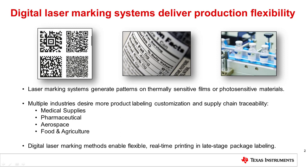Some examples where laser marking is used include printed circuit boards, also known as PCBs, plastic bottles, medical devices, and cardboard boxes. Typical marks include 2D matrices or QR codes, logos, sequential batch data, and lot numbers or date codes.